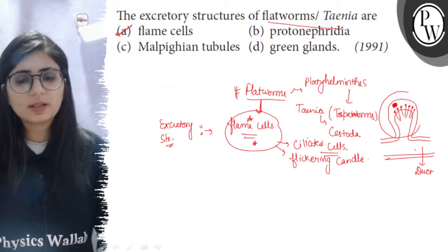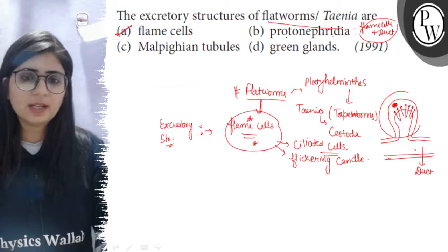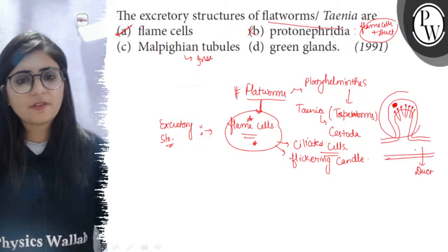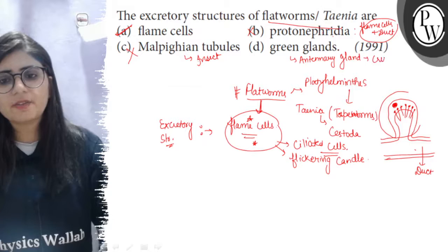If we look further, the other three options: protonephridia, so I told you flame cells along with the ducts, along with its tubule, then it is called protonephridia, so here it is wrong. Then Malpighian tubules, so Malpighian tubules are the structures, tiny blind structures which are present at the junction of mid gut and hind gut, and these are found in insects. So this is also incorrect.